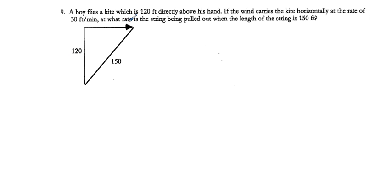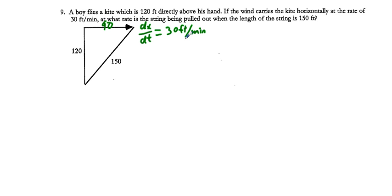Problem 9 is a boy flying a kite — similar to problem 7, involving the same 3-4-5 type right triangle. If one side is 120 and the hypotenuse (string) is 150, the remaining side is 90. Here you're given dx/dt = 30 feet per minute and trying to find dH/dt (how fast the string length is changing). Look back at problem 7 for good clues. This video should be somewhat helpful as you consider your homework assignment.